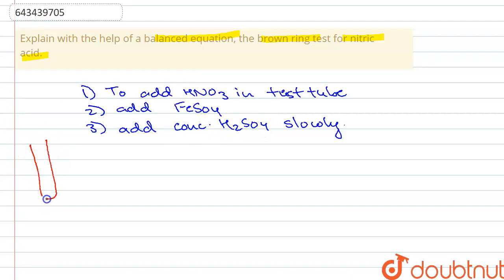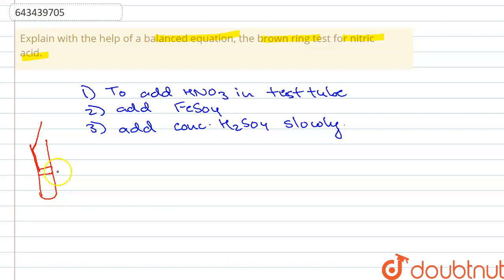In the test tube we have put HNO3 and FeSO4 and mixed them together. Now H2SO4 is added slowly through the walls of the test tube, so it forms a layer on top of the solution. At the junction of the two solutions, a brown ring will be formed.